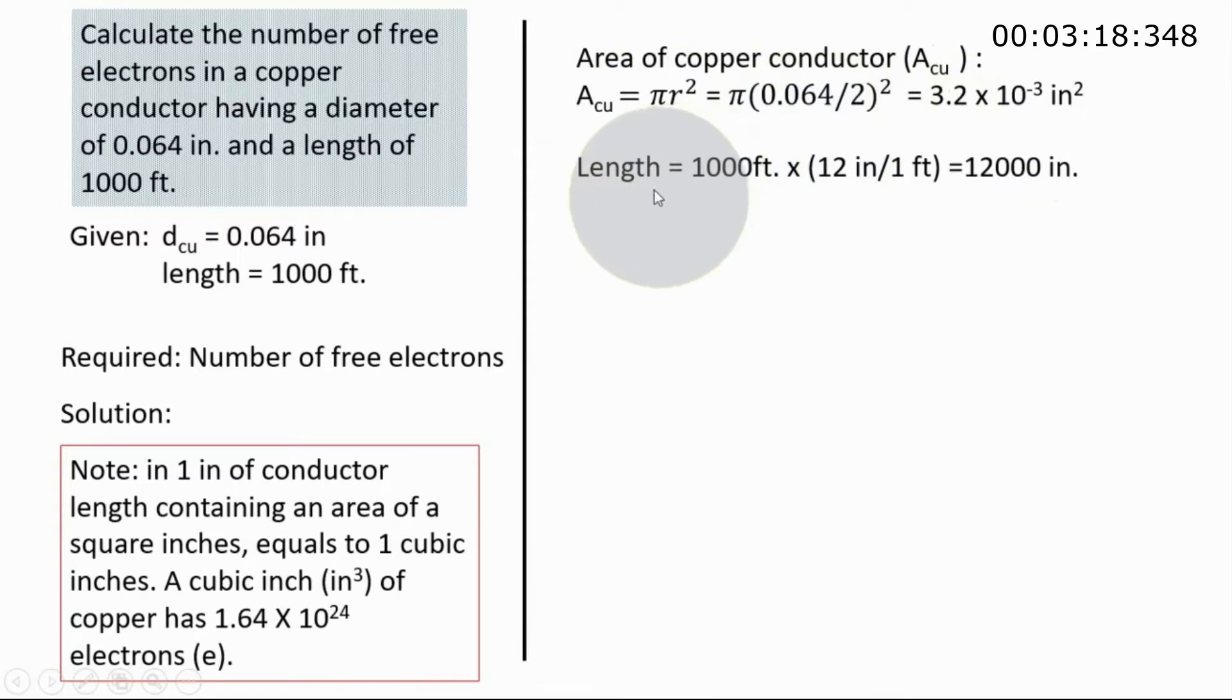And also, our length is 1000 feet. Since we are dealing here with inches, we should convert this feet to inches. So we take the conversion factor that in one foot there is an equivalent 12 inches. We place the 12 inches in our numerator and the feet in our denominator for cancellation. What remains is the unit inch. When you multiply that, it will give you 12,000 inches.